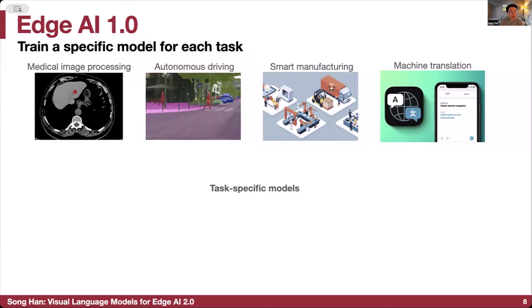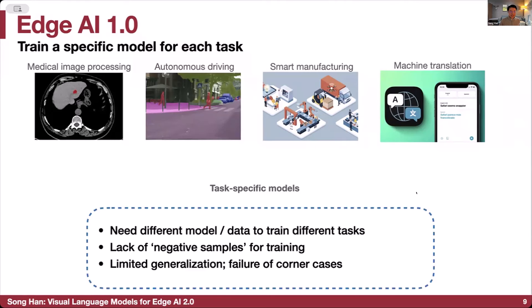That's AI 1.0: training a specific model for each task, like medical imaging, autonomous driving, smart manufacturing, or machine translation. The limitation is that we need a different model and different data for different tasks. The lack of negative samples for training really hinders several use cases, for example anomaly detection. Training images are much smaller in normal cases, there is limited generalization capability, and it is very easy to encounter failure for corner cases.